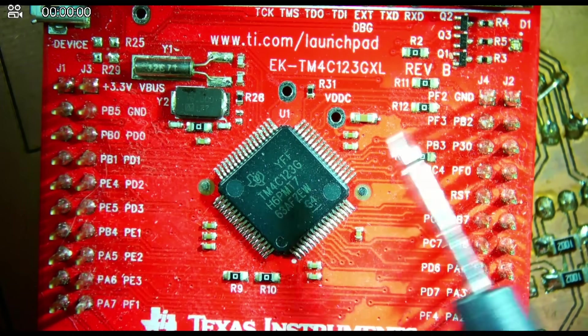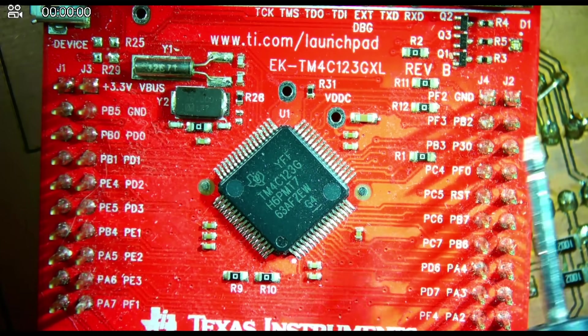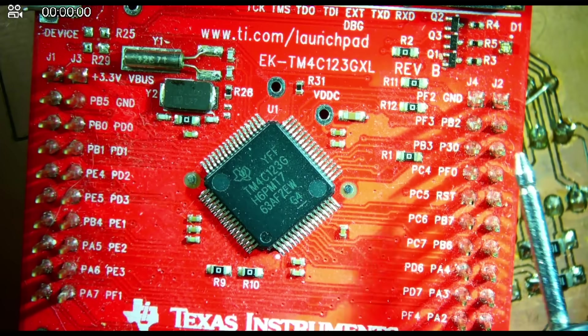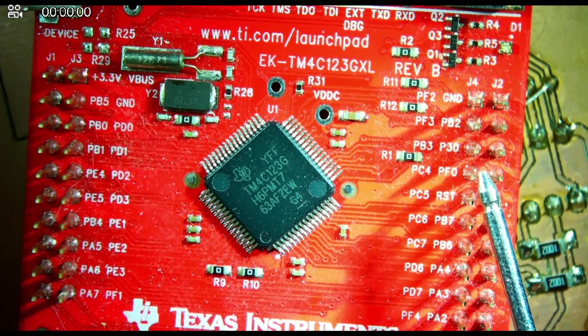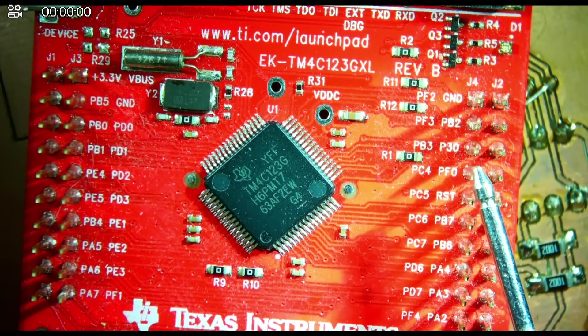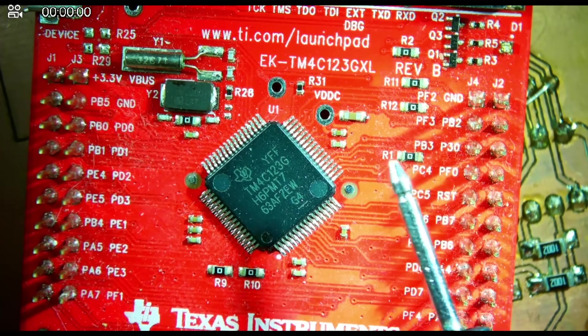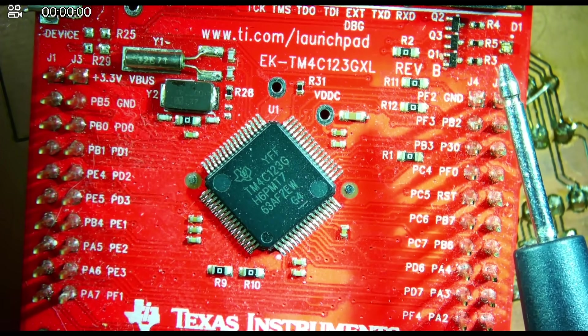And that's hooked to the general purpose IO on this microcontroller. I can write a program that allows this LED to do something. Those GPIO pins also connect to these external header pins that I could use for motor drivers or analog inputs, whatever they may be.